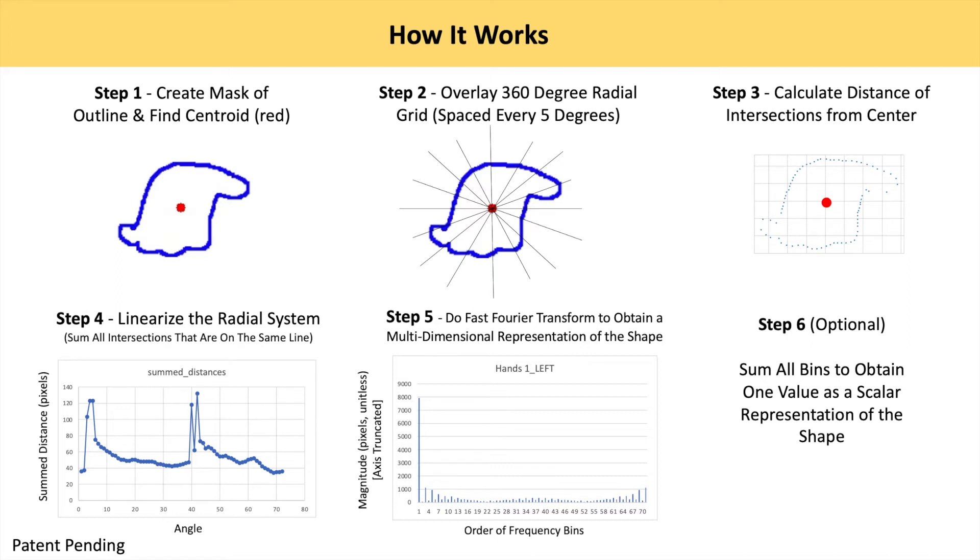Here is how the LCPC works on hands. In step 1, we first outline the edge of a hand and calculate the centroid. In step 2, that centroid will become the origin of a 360-degree radial grid that's spaced every 5 degrees.